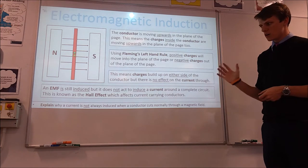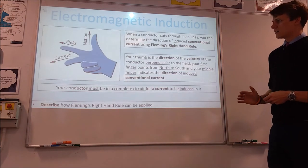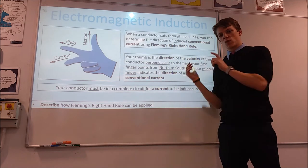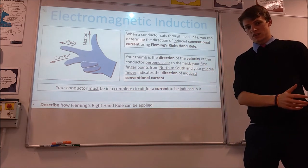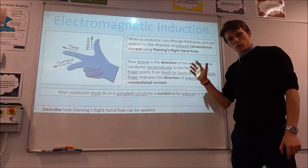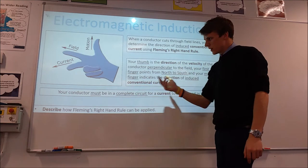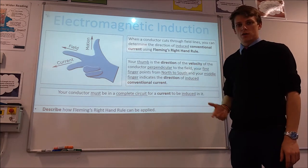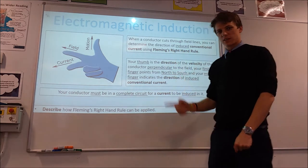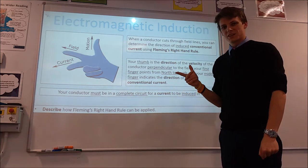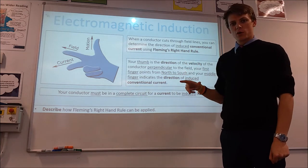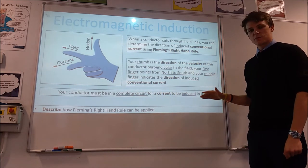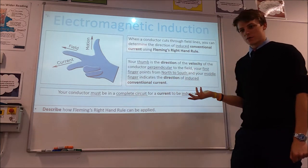Those are your three scenarios, and this links into something called Fleming's right hand law. Fleming's right hand law predicts the direction of the induced current — more specifically the direction of conventional current. Your first finger is still the field, just like with the left hand law. Your thumb represents the direction of motion of the conductor, and then your middle finger will point in the direction that conventional current will flow. This only applies when the conductor is in a complete circuit.